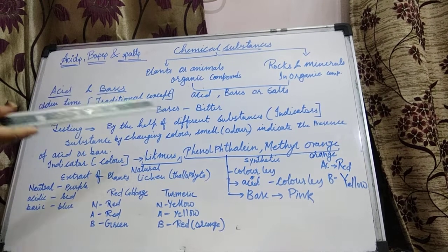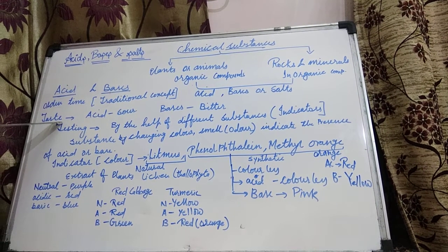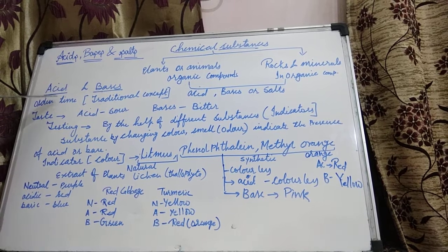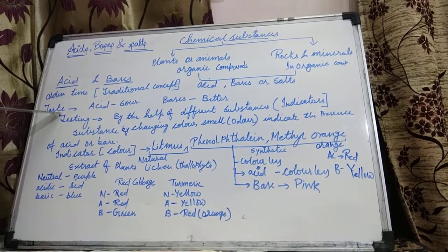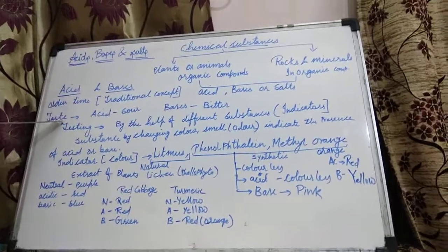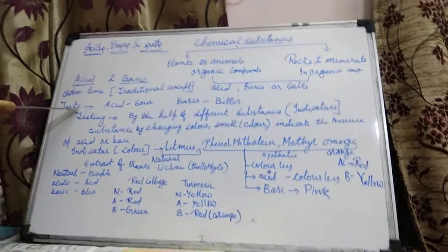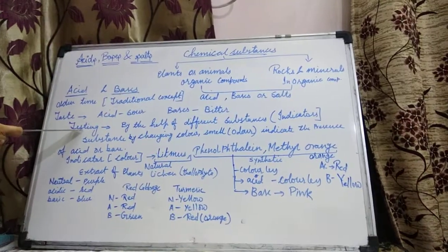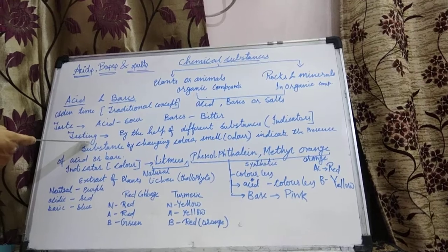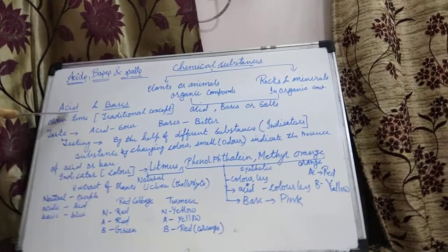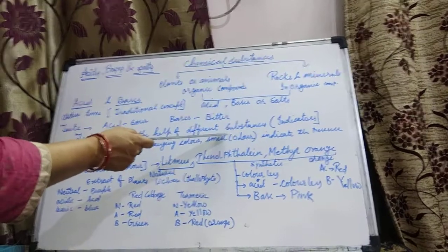But as you also know, we cannot identify a substance by tasting it. We cannot taste every acid or base because some acids are very harmful. So we cannot taste every chemical substance. Instead of taste, we test them. We test by qualitative analysis to determine whether a substance is an acid or a base, using different substances to identify them.